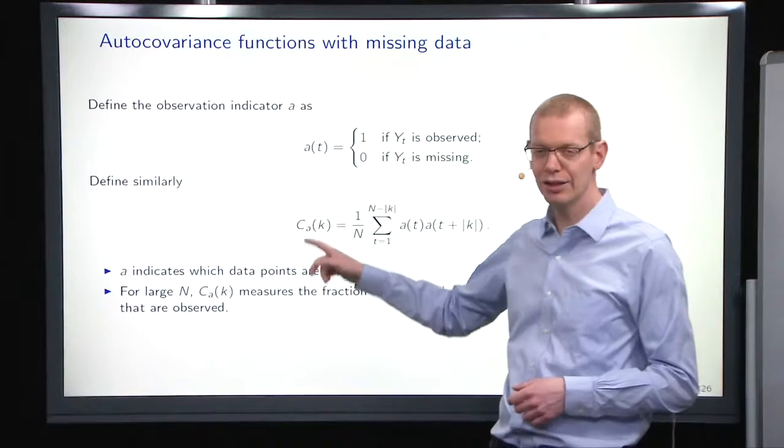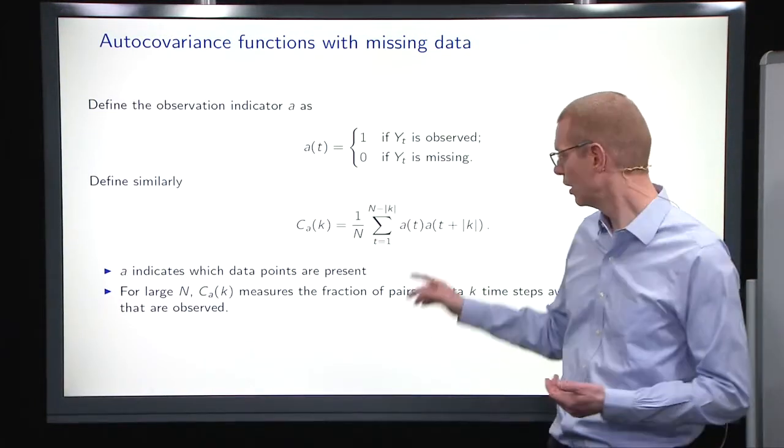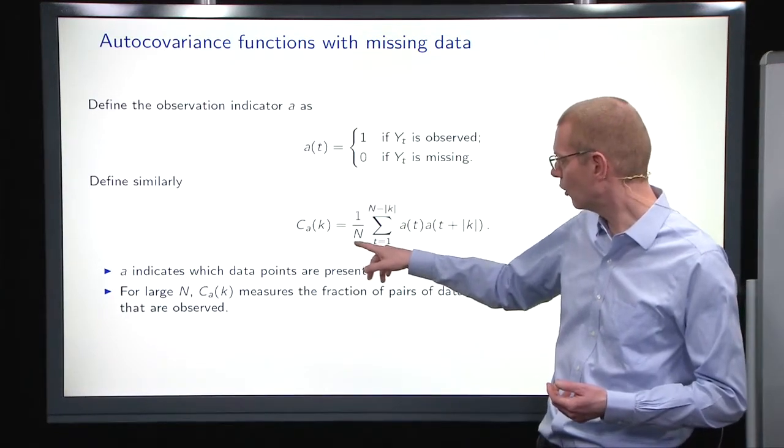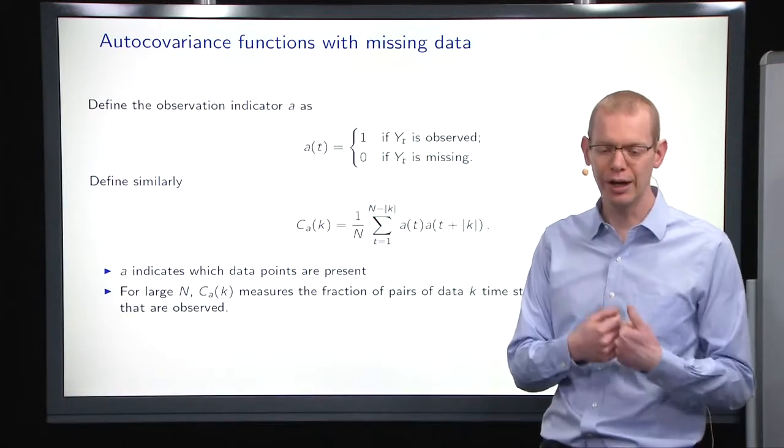So this here is a count, and then you divide by n, so it is a proportion of how large proportion of the possible pairs that can go in to an autocovariance are actually available.